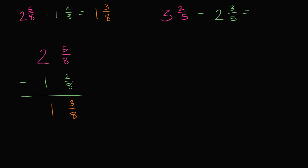Well, let's try to work it out this exact same way. I'm going to rewrite it as 3 and 2 over 5 minus 2 and 3 over 5.